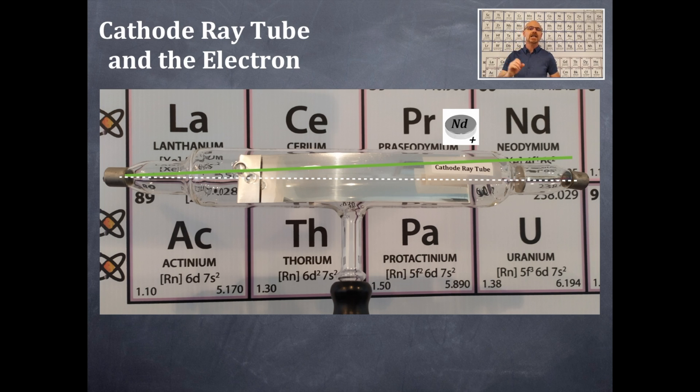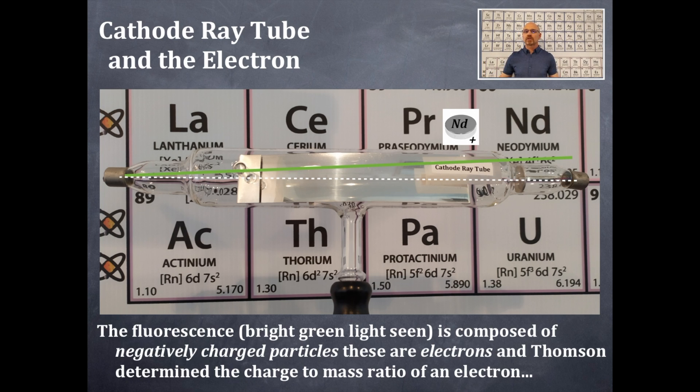If I took the negative end of the magnet, then that cathode ray tube beam of light would move in the opposite direction and away from the magnet. That fluorescent green light is composed of negatively charged particles. Those are electrons and that's what JJ Thompson did, is he determined the charge to mass ratio of an electron.